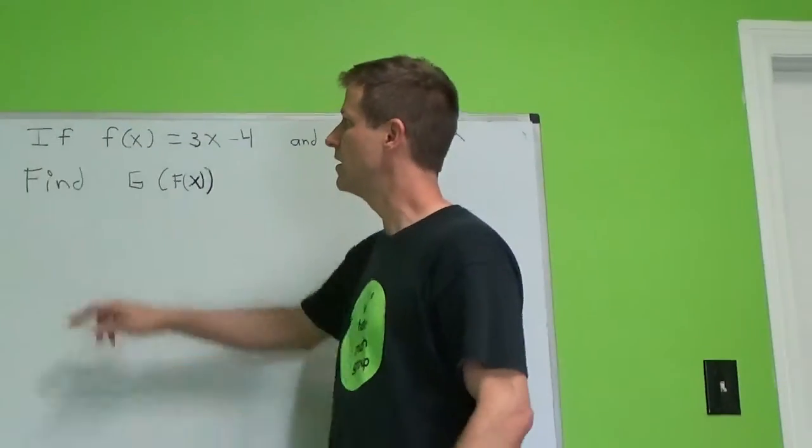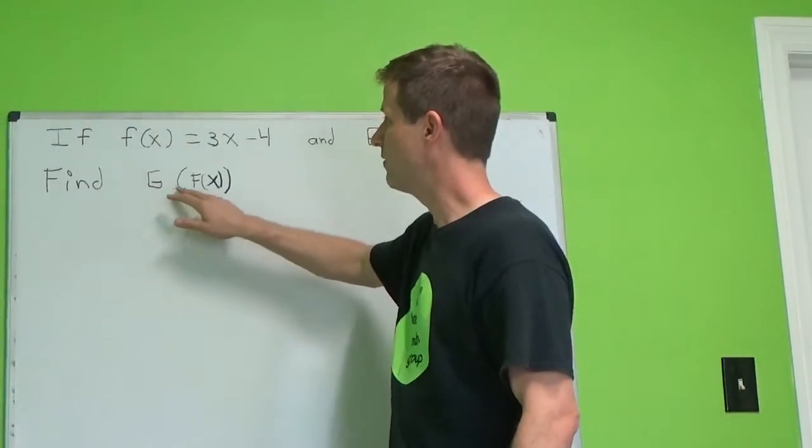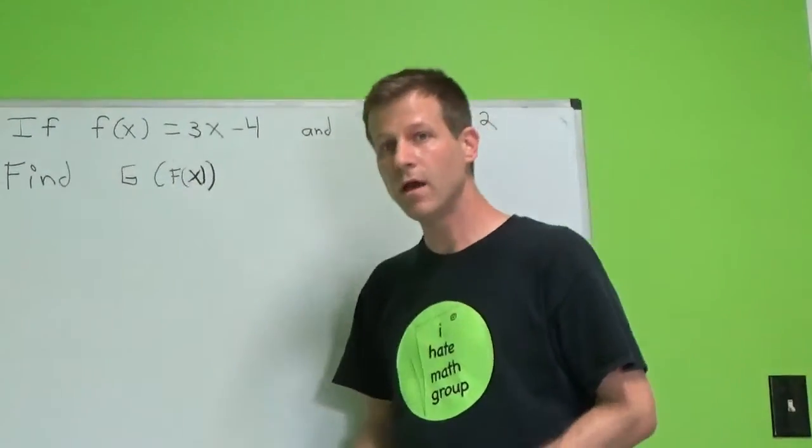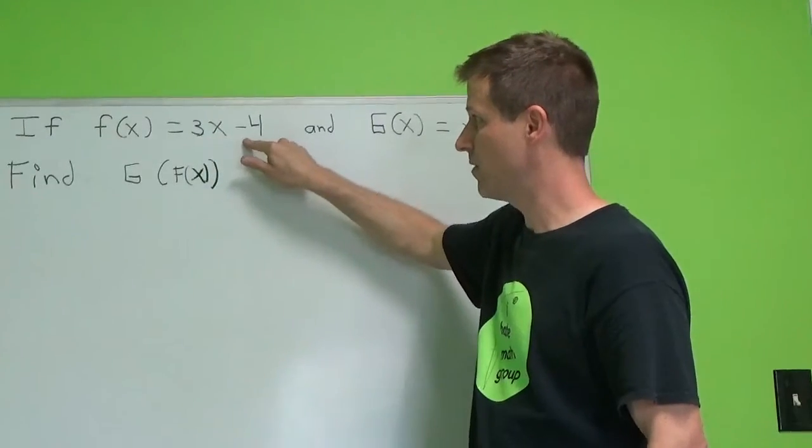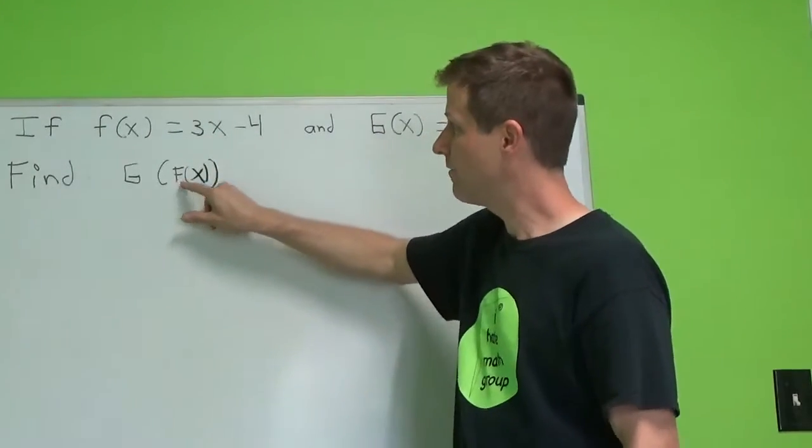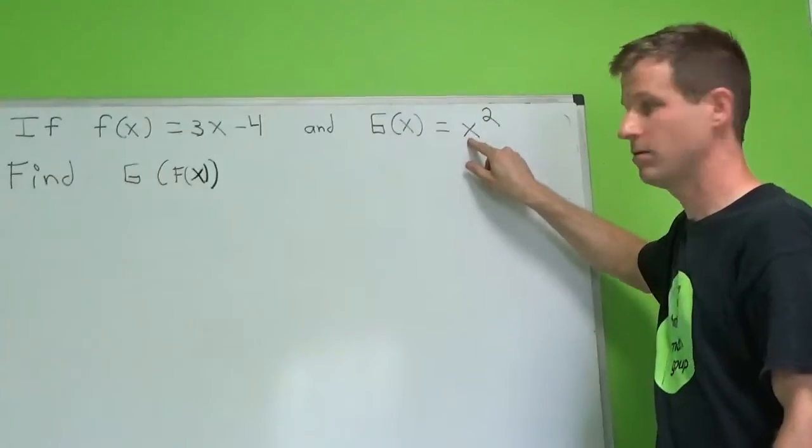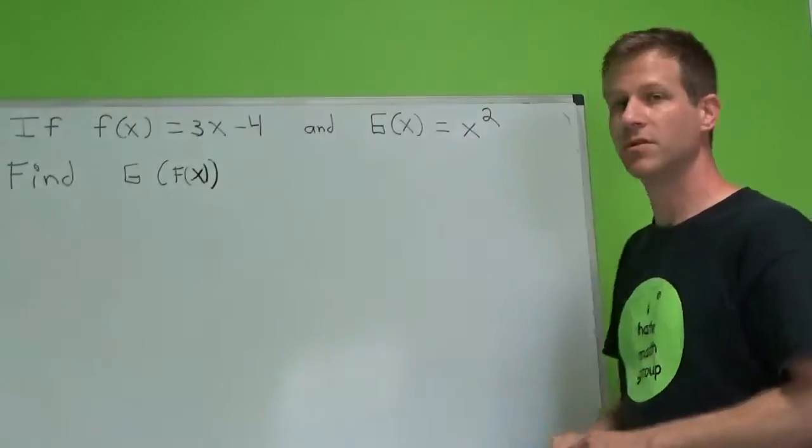But look what they're asking. They're asking, find g of f of x. So we know that f of x represents 3x minus 4. We need to plug f of x into here. That's all we're doing. So let's do it.